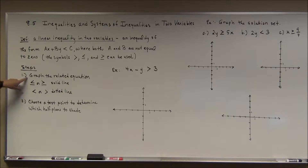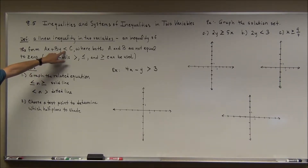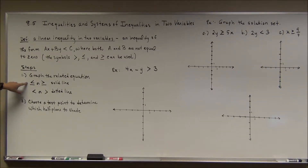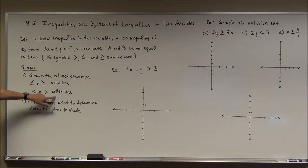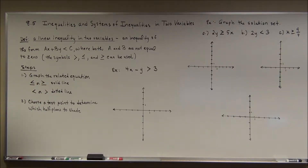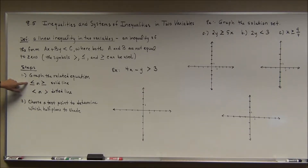The steps: first, we graph the related equation — we change the inequality to an equation and graph that line. Do we want the line as part of our answer? If it has the equal to, we include the points on the line in our solution set. If it doesn't, we represent that with a dotted line. This is like the filled-in circle versus open circle from the number line, or the bracket versus parenthesis in interval notation.